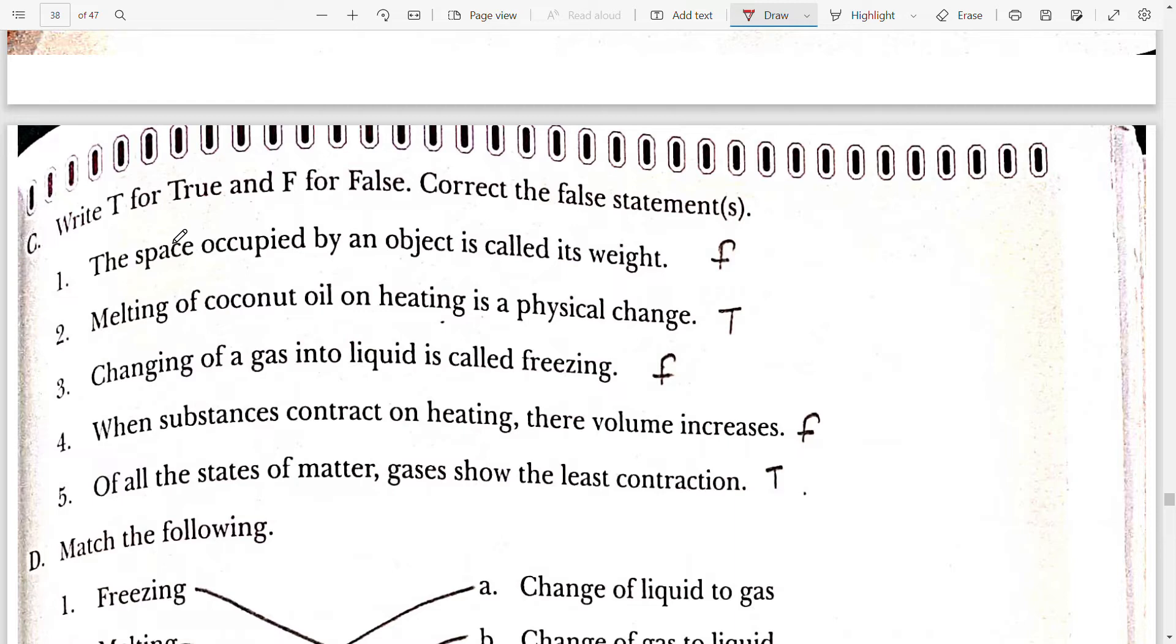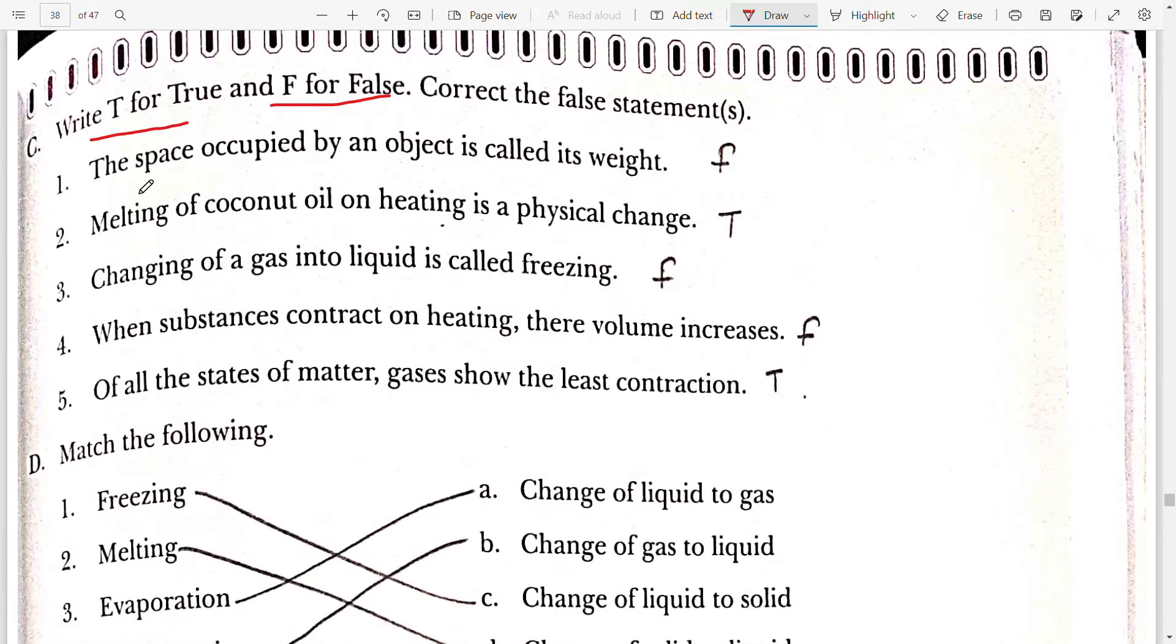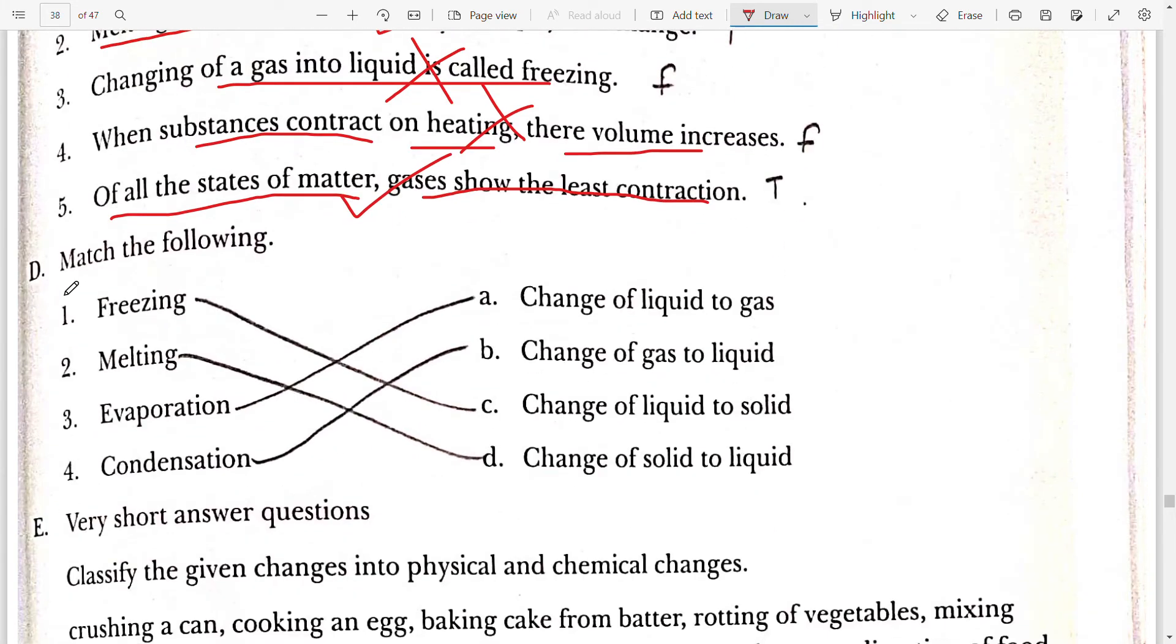Now see true or false, write T for true and F for false. First, the space occupied by an object is called its weight. It is false. Melting of coconut oil on heating is a physical change. Yes, it is true. Third, changing of gas into liquid is called freezing. False. Fourth, when a substance contracts on heating, their volume increases. False. Fifth, of all the states of matter gases show the least contraction. It is true.